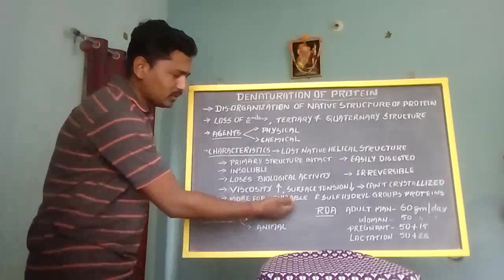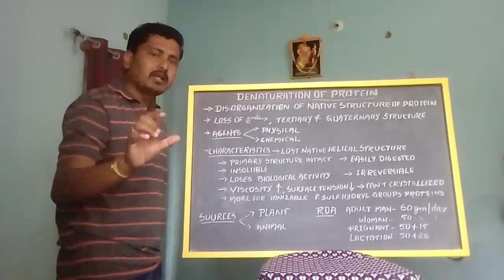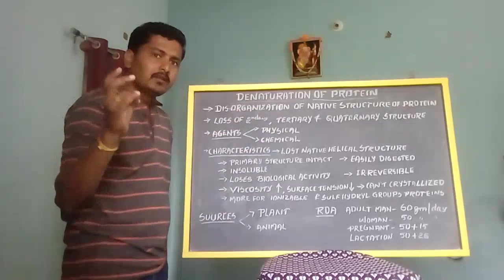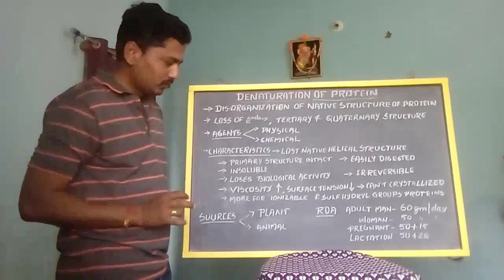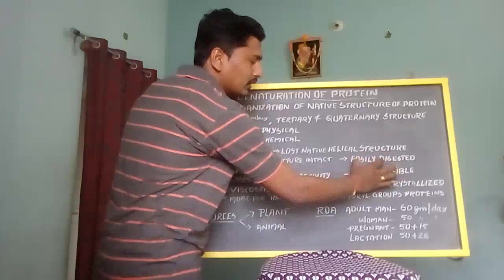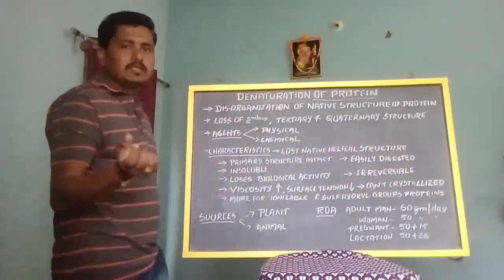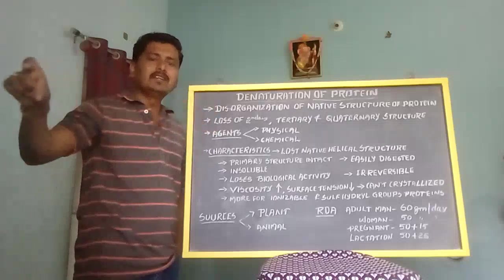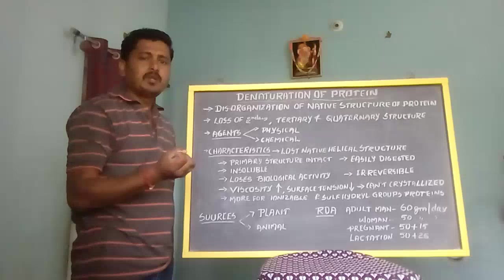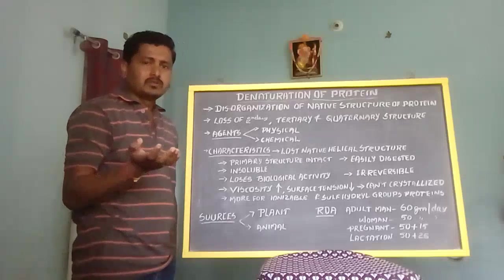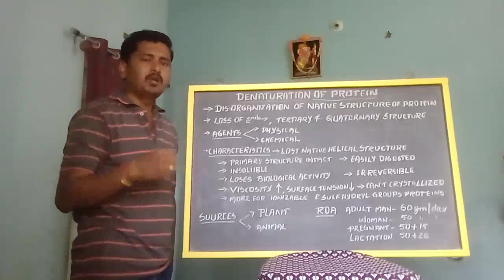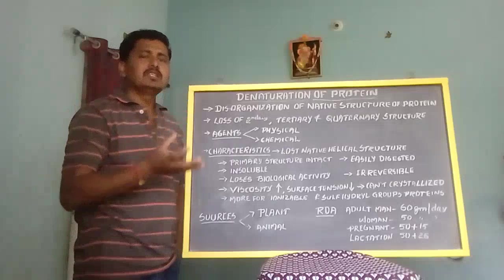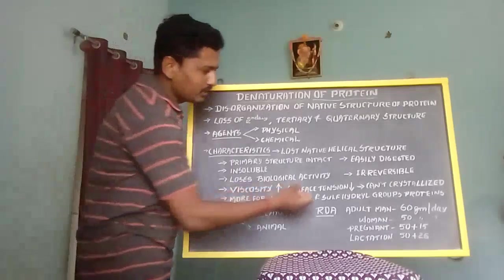This denaturation process is more common among ionizable and sulfhydryl-containing proteins. Furthermore, denatured proteins are easily digestible. This is because there is a loss of secondary, tertiary, and quaternary structure — the branched chain is lost and only the linear chain remains, making the peptide bonds easily accessible and exposed to digestive enzymes. That is why denatured proteins are easily digestible and absorbable in the GI tract.